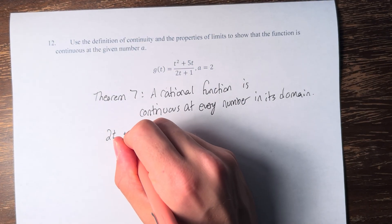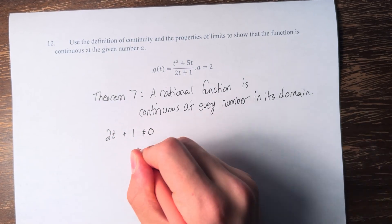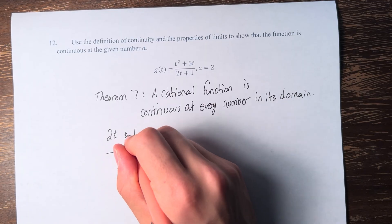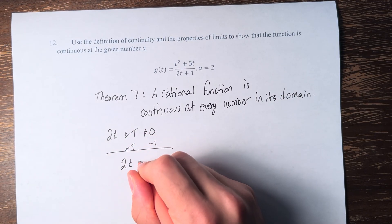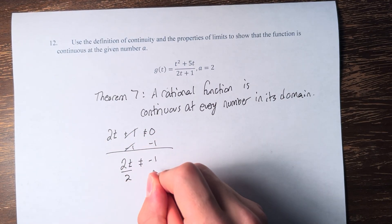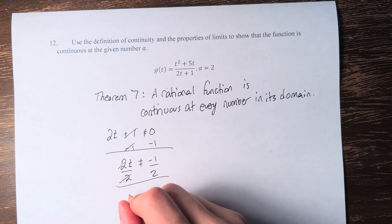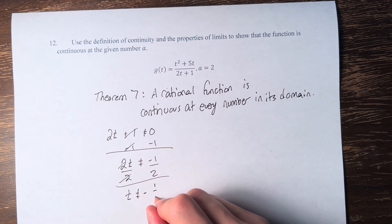So 2t plus 1 cannot equal 0. Solving for 2t, we get that t cannot equal negative 1 half.